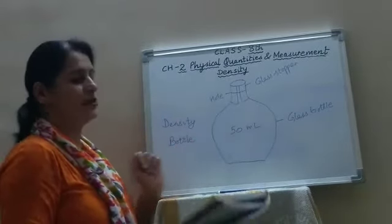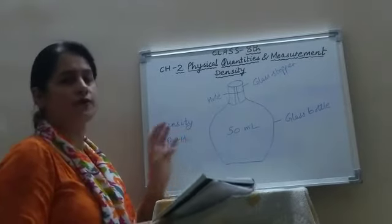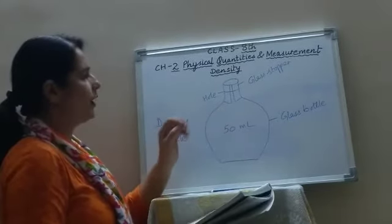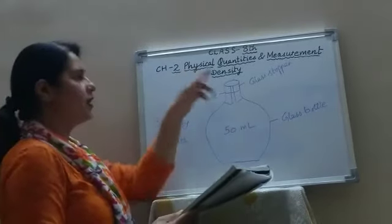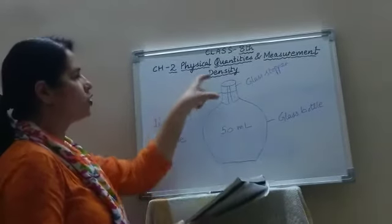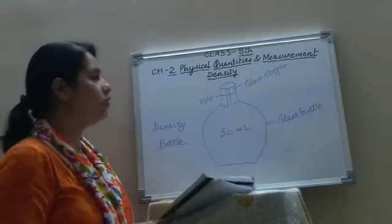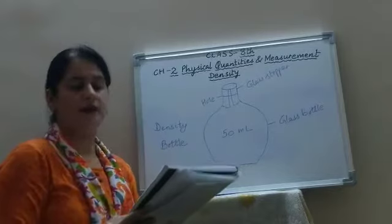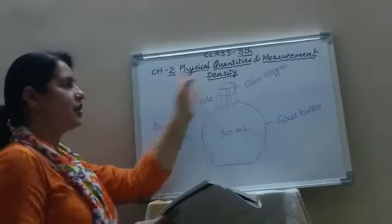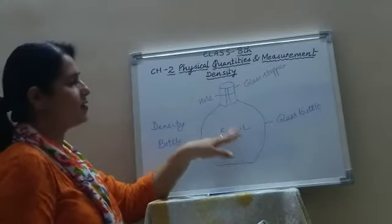Now children, this is a density bottle — a specially designed bottle used to store a fixed amount of liquid. The capacity is marked on it, for example 50 ml. It is a small glass bottle having a glass stopper at its neck. The stopper also has a small hole in it. When the bottle is filled with liquid and the stopper is inserted, excess liquid rises through the hole and is drained out. Thus the bottle always contains the same volume of liquid as marked on it.